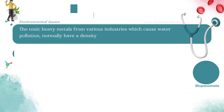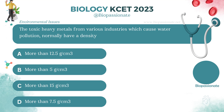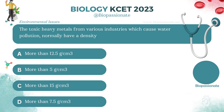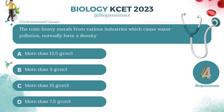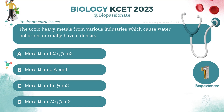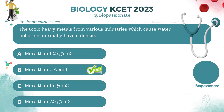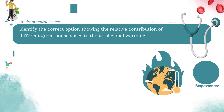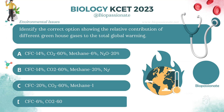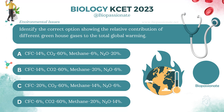The toxic heavy metals from various industries which cause water pollution normally have a density of what value? Answer: More than 5 grams per cubic centimeter.